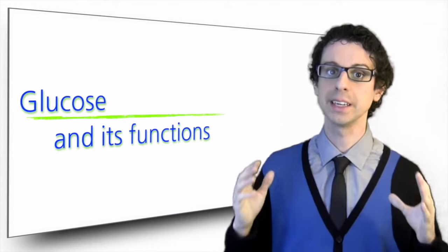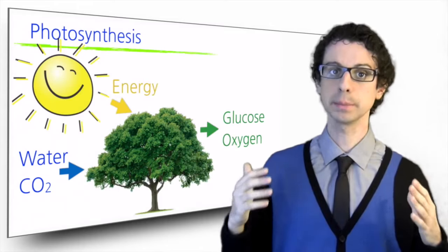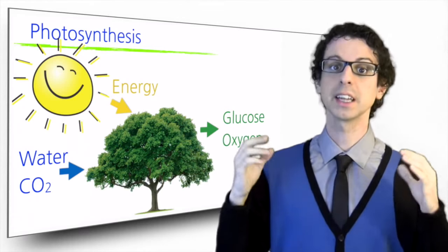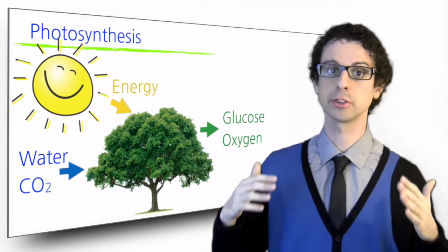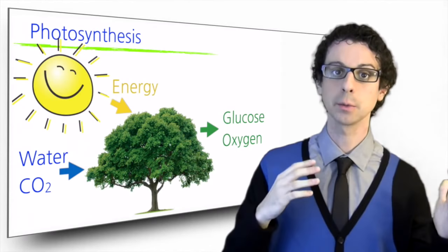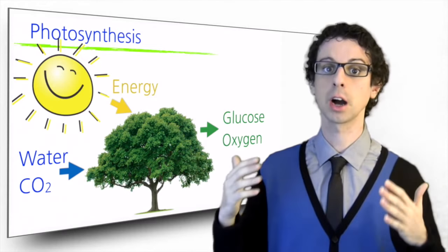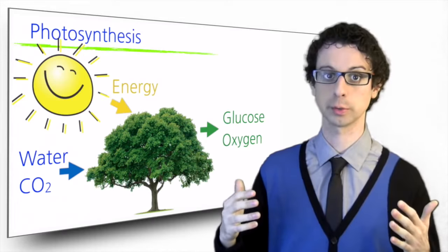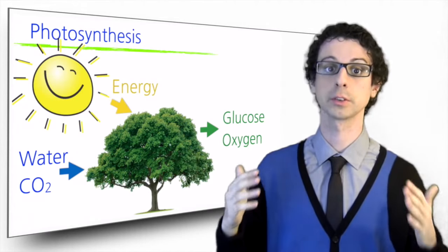Plants do this work for us. In their leaves, plants contain a green pigment called chlorophyll that enables them to use the energy from the sun to combine water and carbon dioxide and turn them into oxygen and the sugar glucose. This process is called photosynthesis.